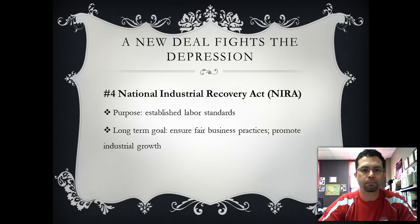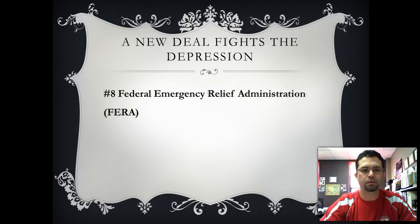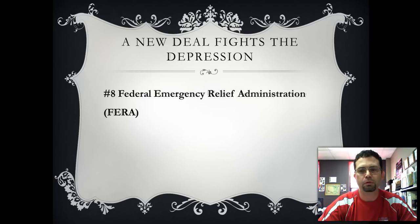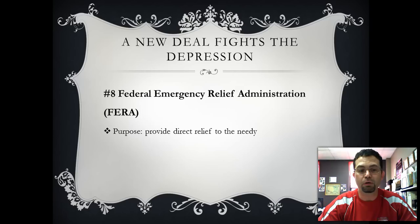Up until this point, everything Roosevelt is doing sounds very similar to what Hoover planned — strengthen the government, close a few banks, create job programs. It's with the Federal Emergency Relief Administration, number eight, where Roosevelt veers off the path that Hoover swore he would not go down. Hoover was adamantly opposed to any kind of direct relief or handouts. The purpose of the FERA was to provide that direct relief — essentially welfare programs. This program set aside $500 million for direct relief, giving food and clothing to the needy, with half of that money going to food and clothing.